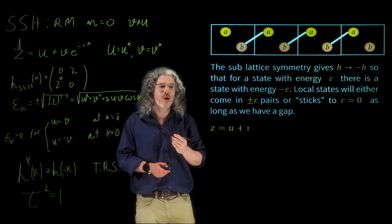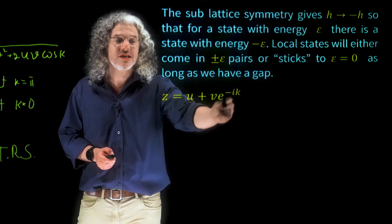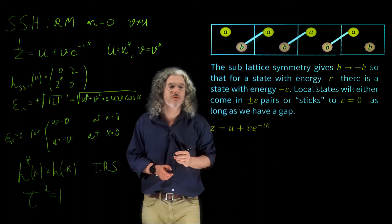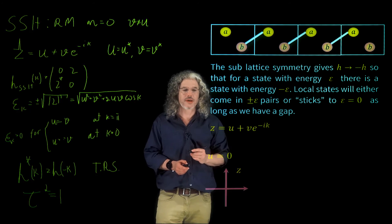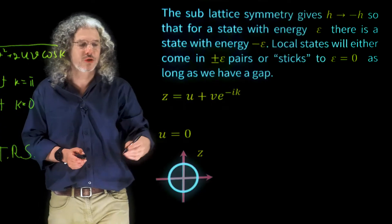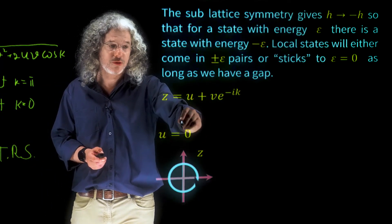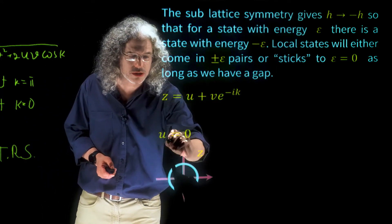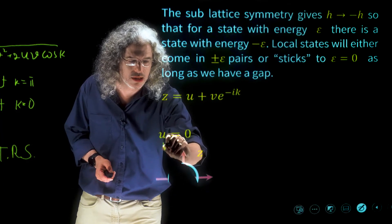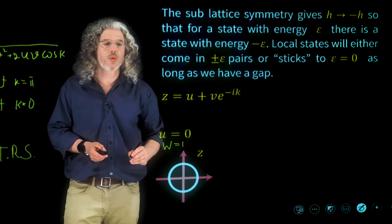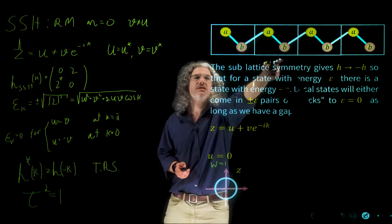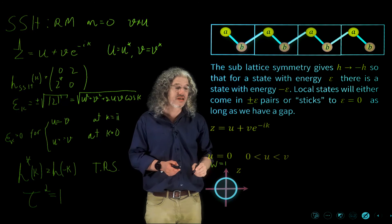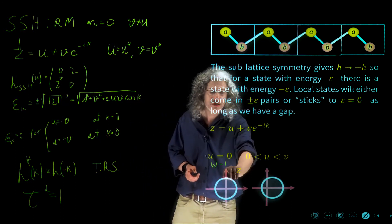As I hinted before, this winding number relates to the structure of the Hamiltonian, which is described completely by the parameter Z. Let's assume U equals zero. If we look at Z as a complex number in the complex plane, for U equal to zero and V equal to one, Z is simply a unit circle going around the origin, so the winding number equals one. If we switch on U but keep U smaller than V, this circle moves a bit to the right but still goes around the origin; the winding number is still one.